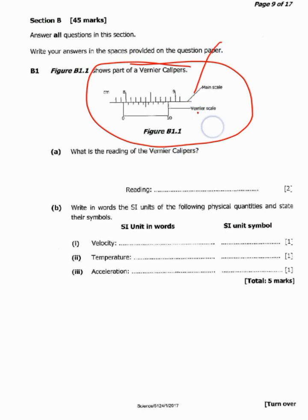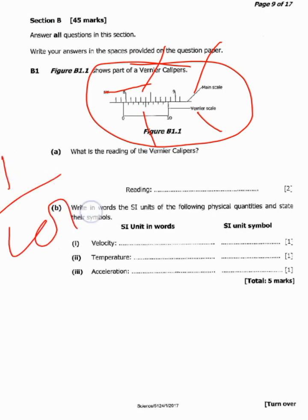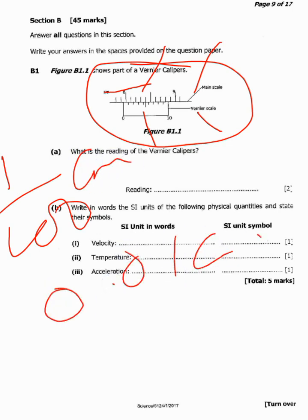There is a main scale and also there is a Vernier scale. If you remember from our previous lesson on measurements, to get the readings from the Vernier calipers we first get the reading from the main scale, which is the upper part, then come to the Vernier scale. From the Vernier scale, do not forget to multiply by the accuracy which is 1 over 100 centimeters, or 0.01 centimeters.